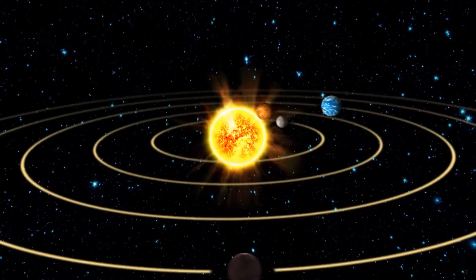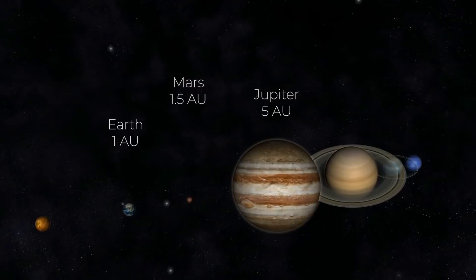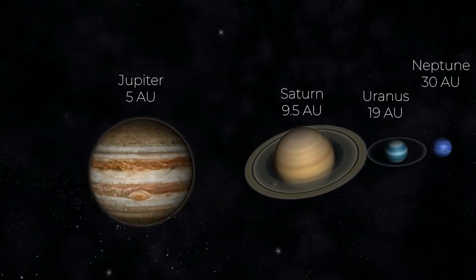Astronomical units are used for distances you'll find in a planetary system, like our solar system. This is because we're really good at understanding the numbers 1 through 10. Mars is about 1.5 AU from the Sun. Jupiter is a little more than 5 AU. Saturn, 9.5 AU. Neptune, 30 AU.